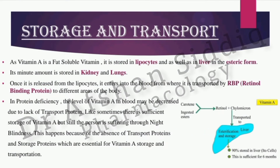Regarding transport — we have already discussed that for transport inside the circulation to different areas, to the different organs where vitamin A is required for growth and development, for example bones and teeth — it is transported with the help of retinol binding protein.